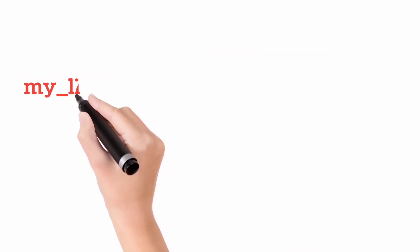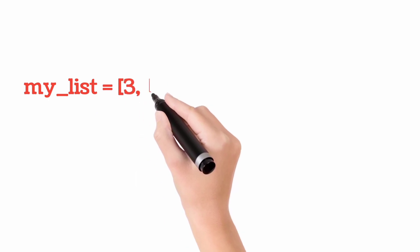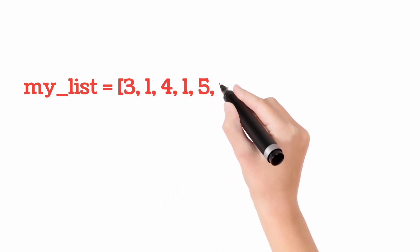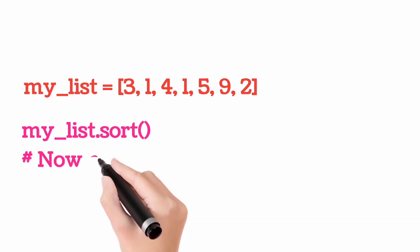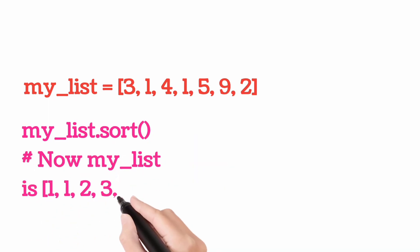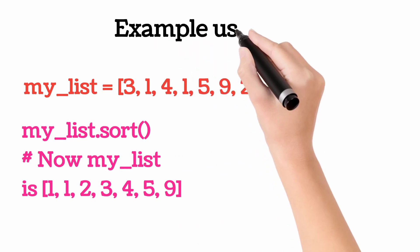Let us consider my_list equals [3, 1, 4, 1, 5, 9, 2]. My_list.sort(). Now my_list is [1, 1, 2, 3, 4, 5, 9].